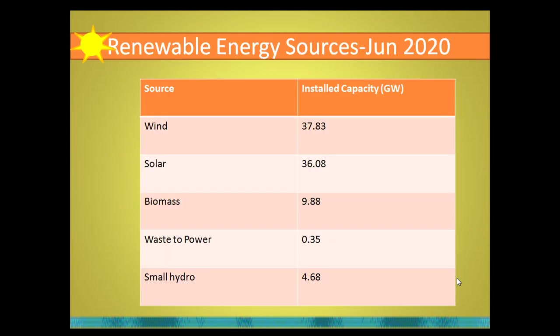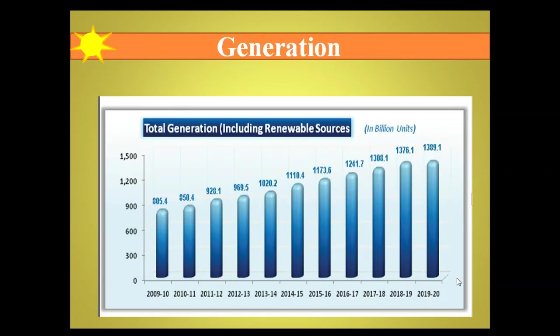Looking at renewable energy sources and their contributions: wind is at 37.83 gigawatt, solar is at 36 gigawatt, biomass is 9.88 gigawatt, waste-to-power is 0.35 gigawatt, and small hydro is 4.68 gigawatt. The major contributors are wind and solar. The data also shows that generation has grown over the years.